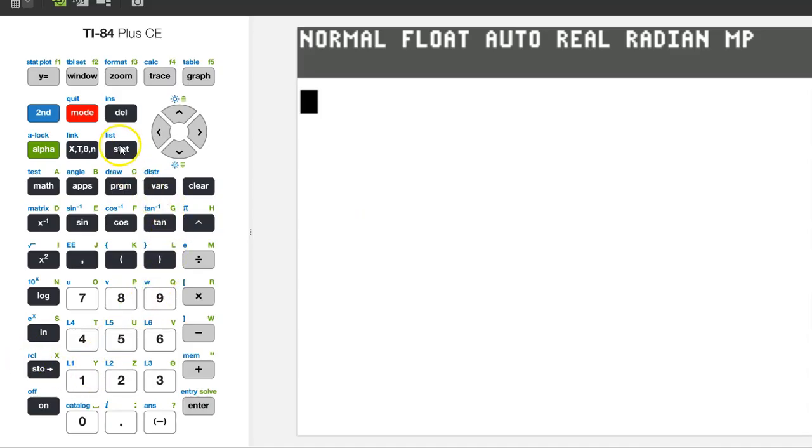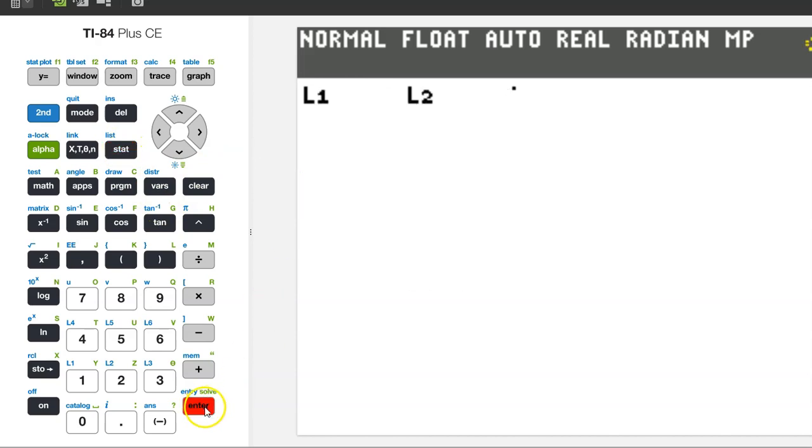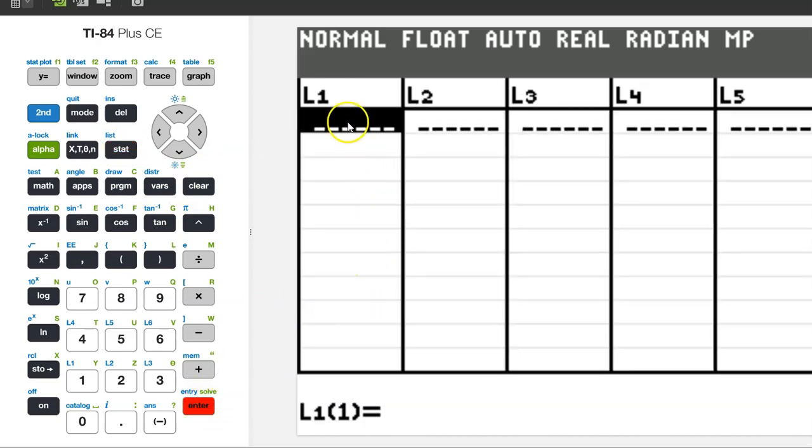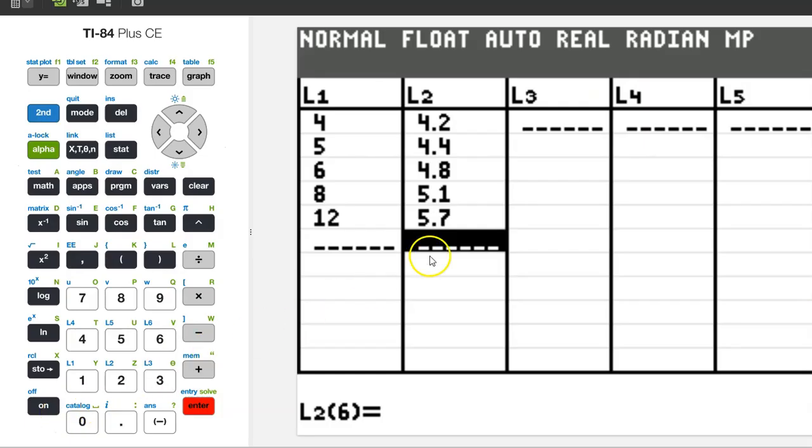To enter the data, hit the stat button. Go ahead and hit enter for edit. We will type the x values into L1 and the y values into L2. We don't have x's and y's, so I should say we will type the input values into L1 and the output values into L2. When you are finished entering the data, it will look like this.